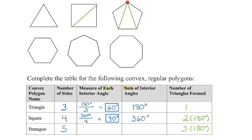Beginning at one vertex of a pentagon, we draw diagonals to each of the other vertices. Going to adjacent corners just traces the side lengths, but drawing to the two non-adjacent corners creates three triangles. Since there are 180 degrees in each triangle, multiplying by three gives 540 degrees total. For a regular pentagon, dividing 540 by the five equal angles gives each angle a measure of 108 degrees.